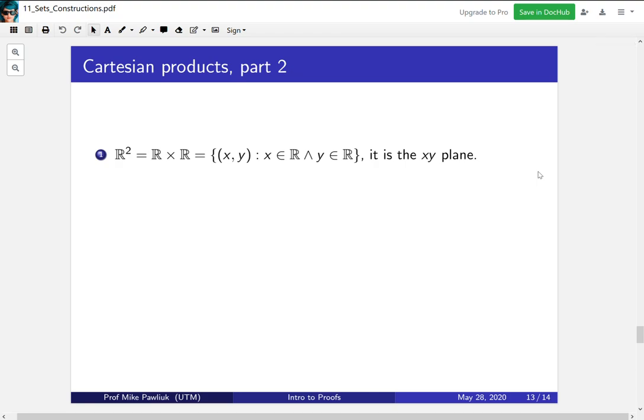Cartesian products show up in other places in math. For example, the xy plane. So R Cartesian product R, which we sometimes represent as R to the 2, is the collection of all xy, where x is in the reals and y is in the reals. It's the xy plane that we're used to.